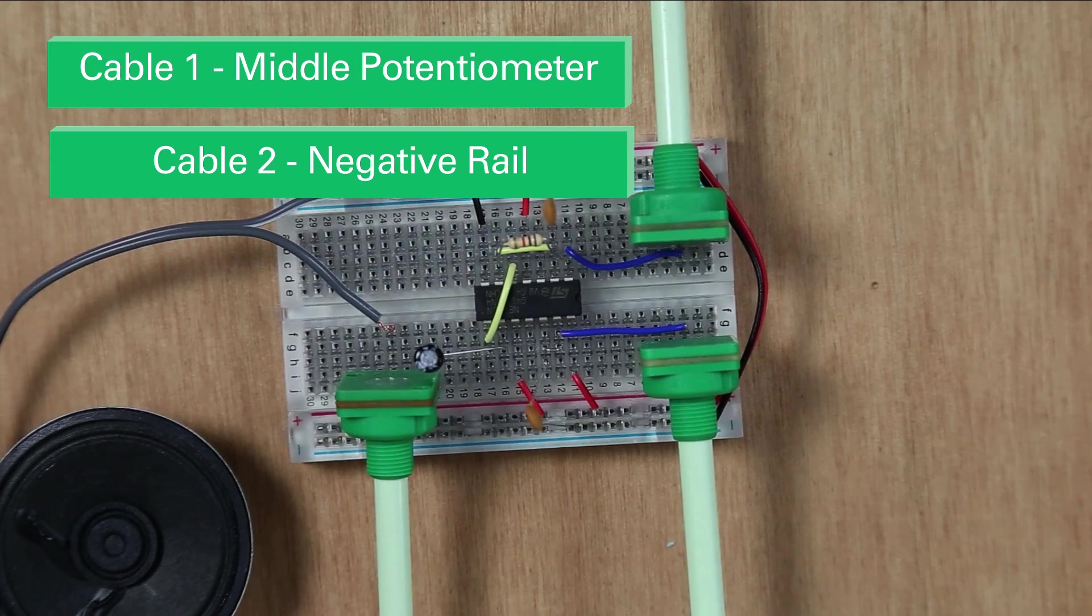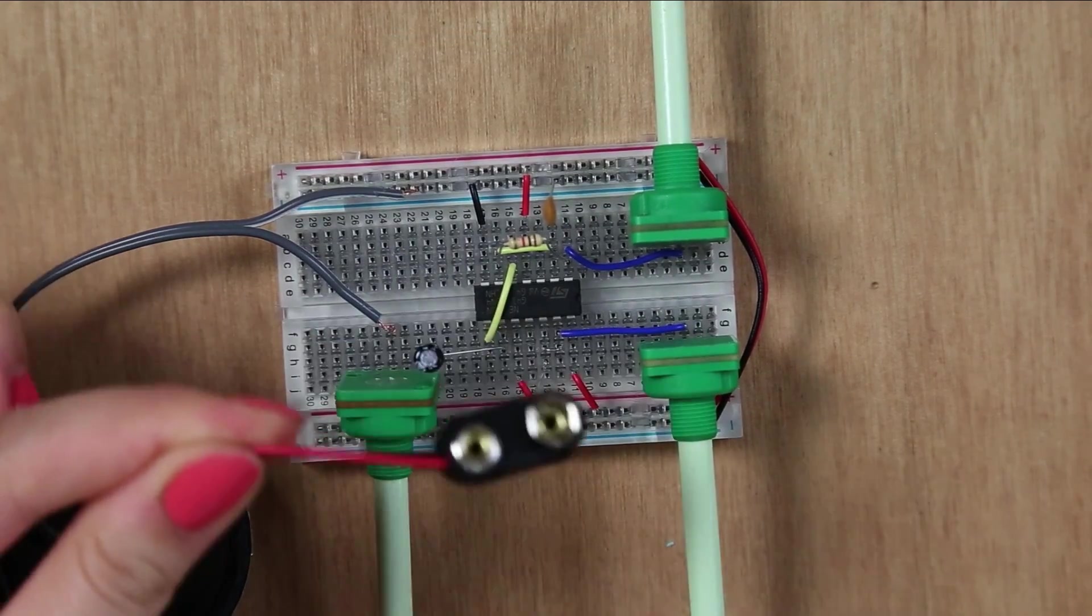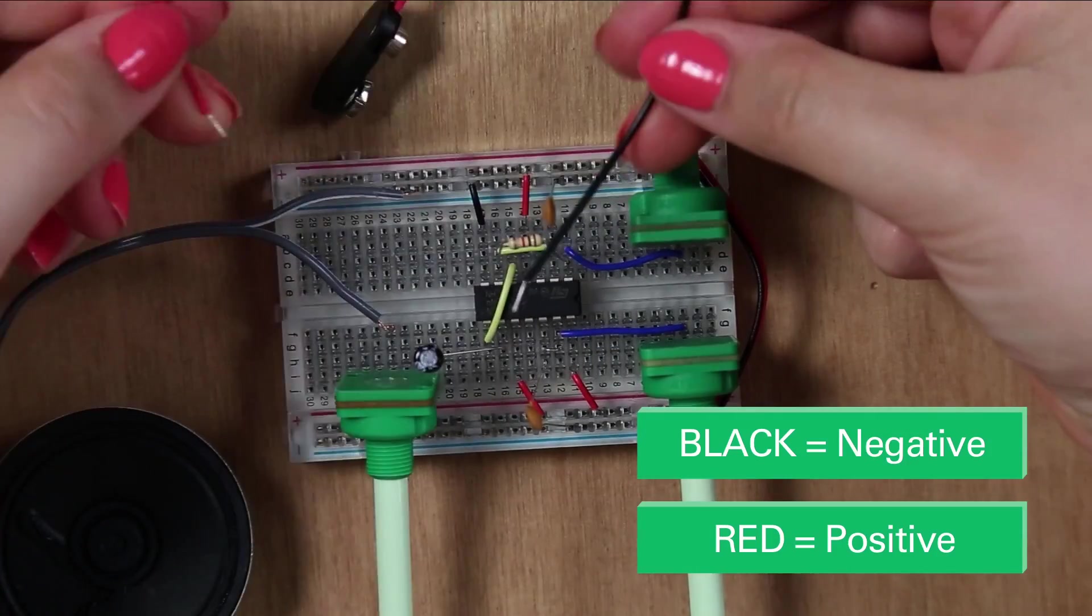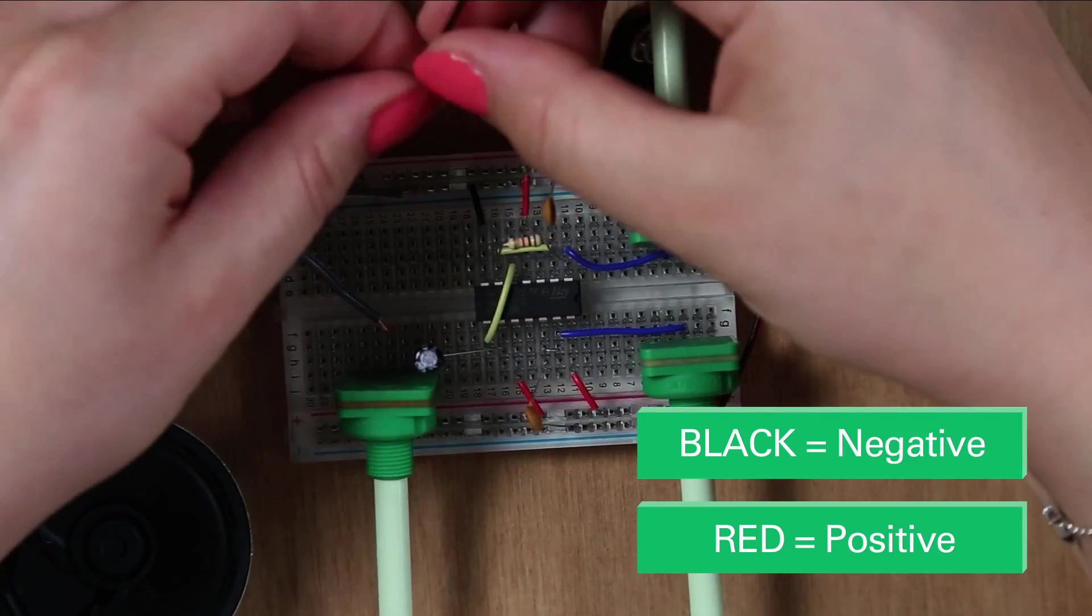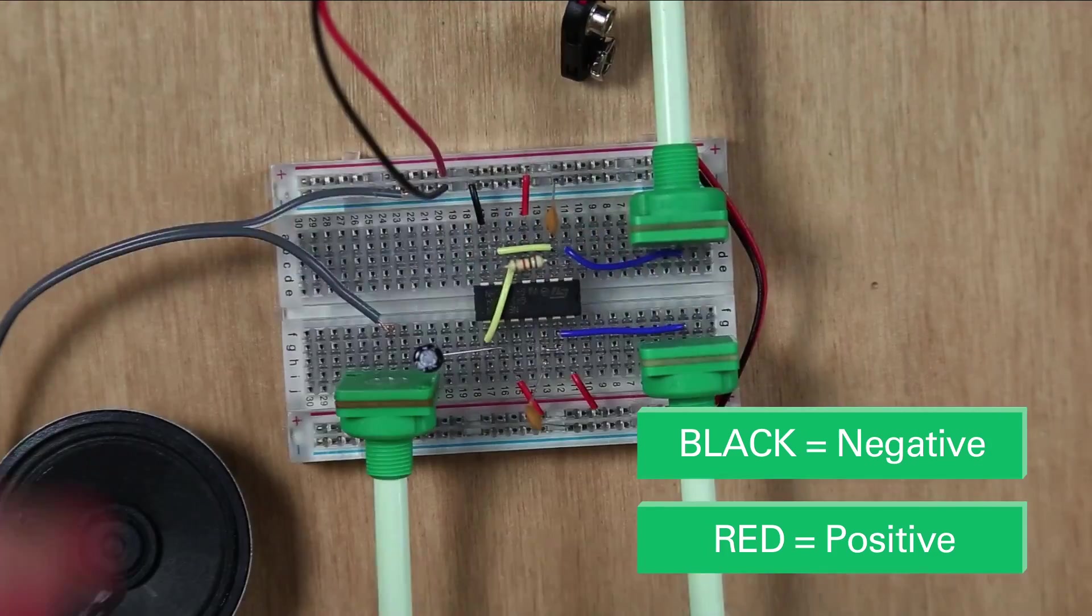And your last component is your battery clip. So this is for your electricity. So they're color coded again. Black for negative, red for positive. So one in there. One in there.